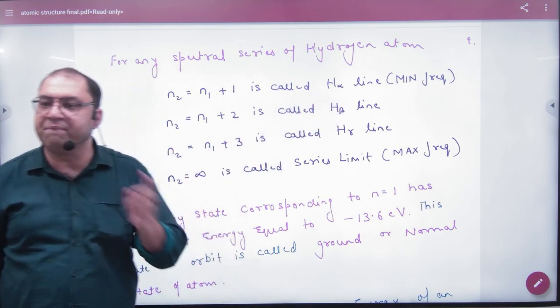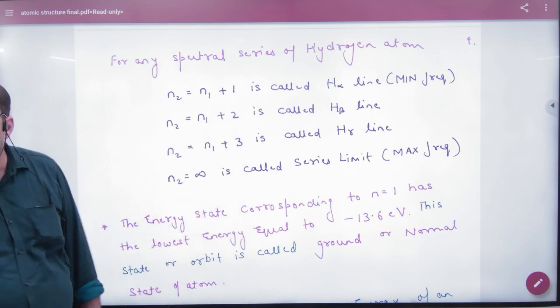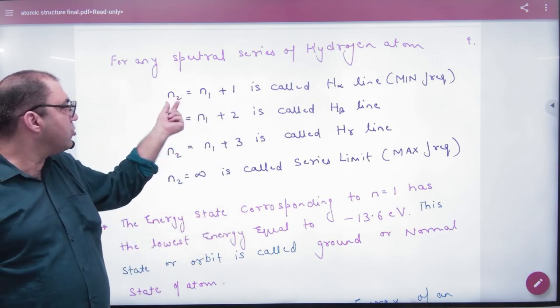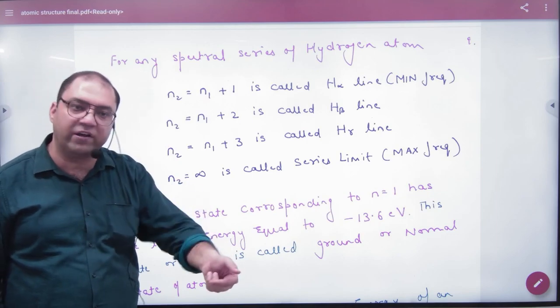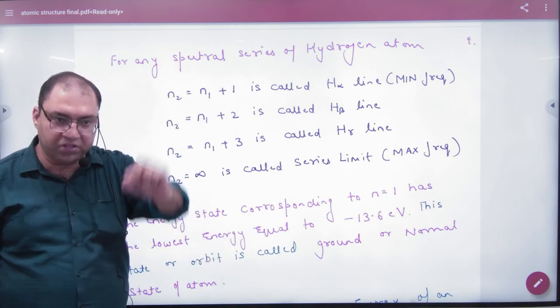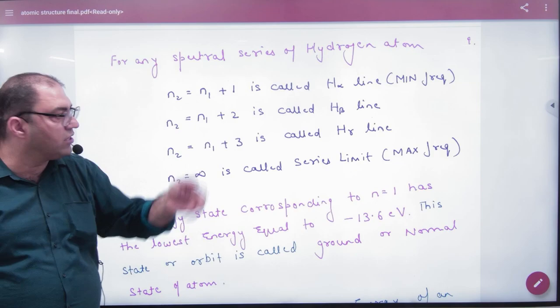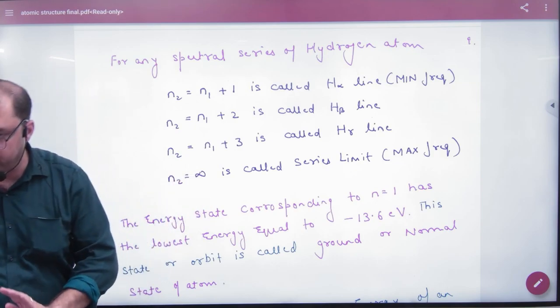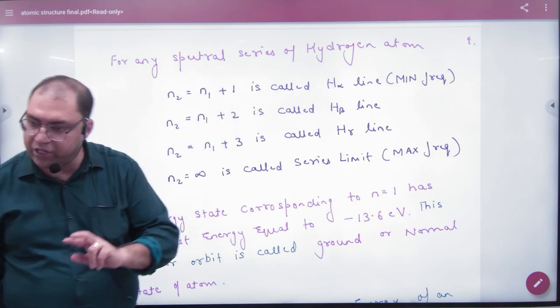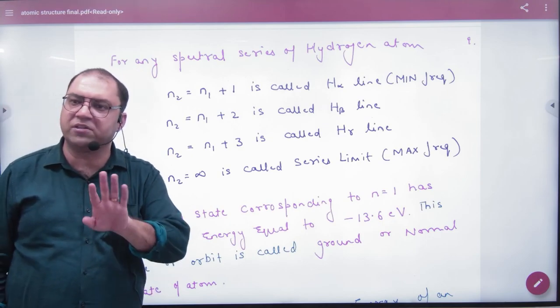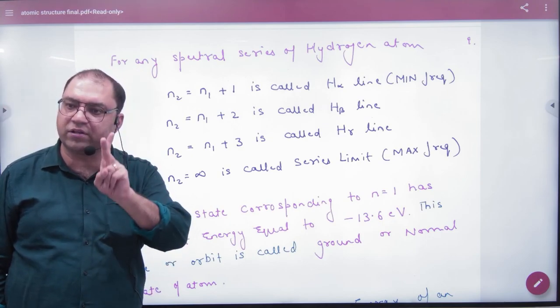H-alpha line is the minimum frequency case. Minimum frequency occurs when the transition is n equals 2 to n equals 1. The frequency is minimum because the difference of the energy is minimum. If the transition is much higher than 2 to n equals 1, which transition is higher?